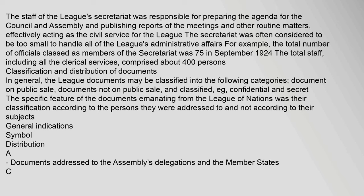The staff of the League's Secretariat was responsible for preparing the agenda for the Council and Assembly and publishing reports of the meetings and other routine matters, effectively acting as the civil service for the League. The Secretariat was often considered to be too small to handle all of the League's administrative affairs. For example, the total number of officials classed as members of the Secretariat was 75 in September 1924. The total staff, including all the clerical services, comprised about 400 persons.